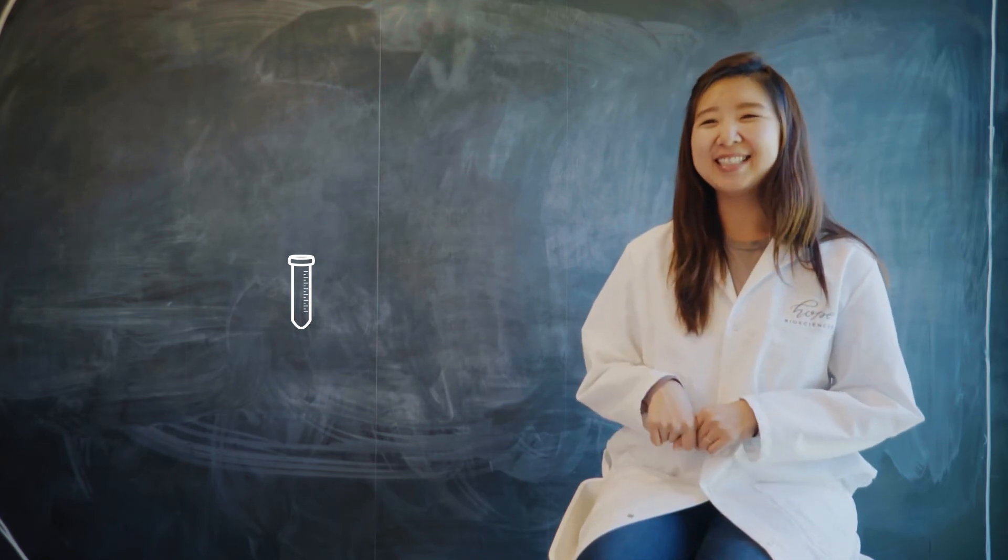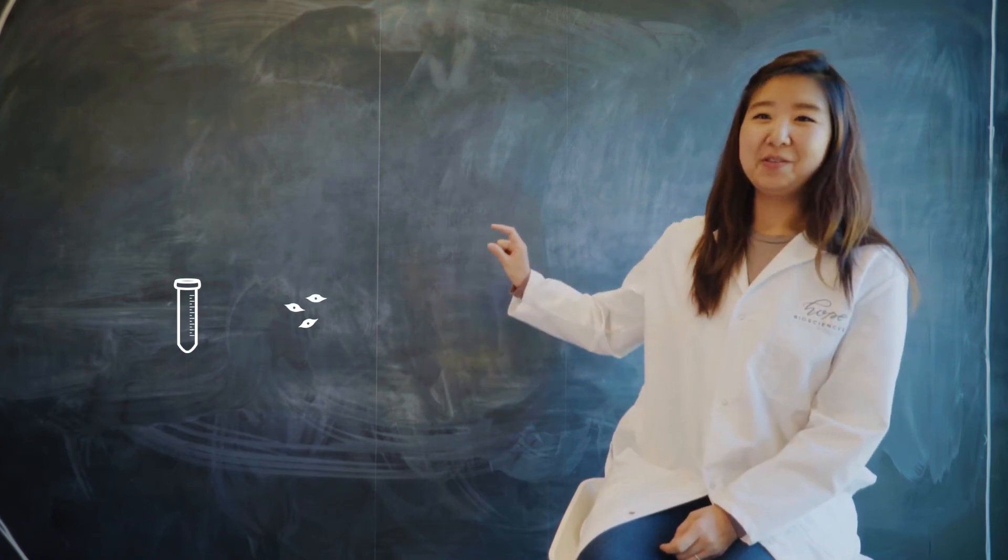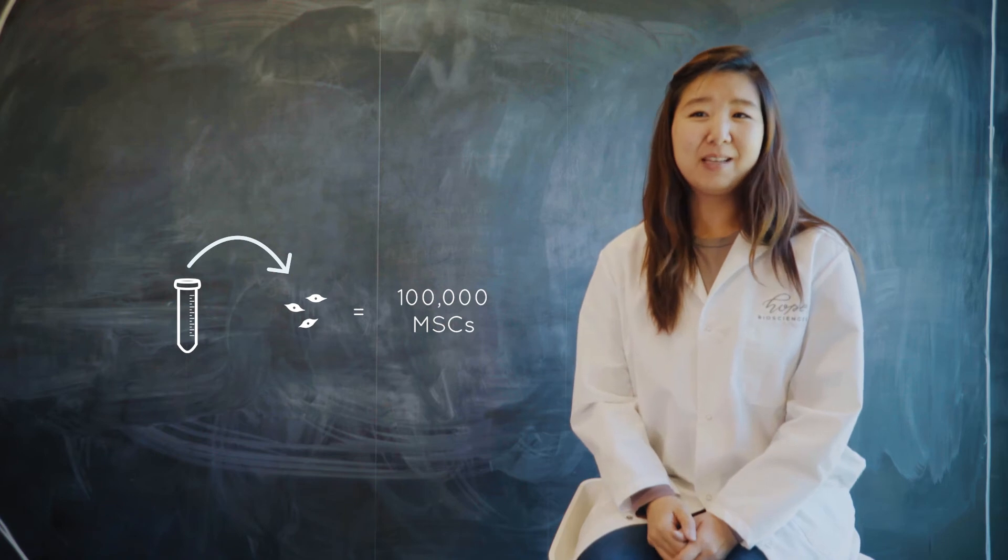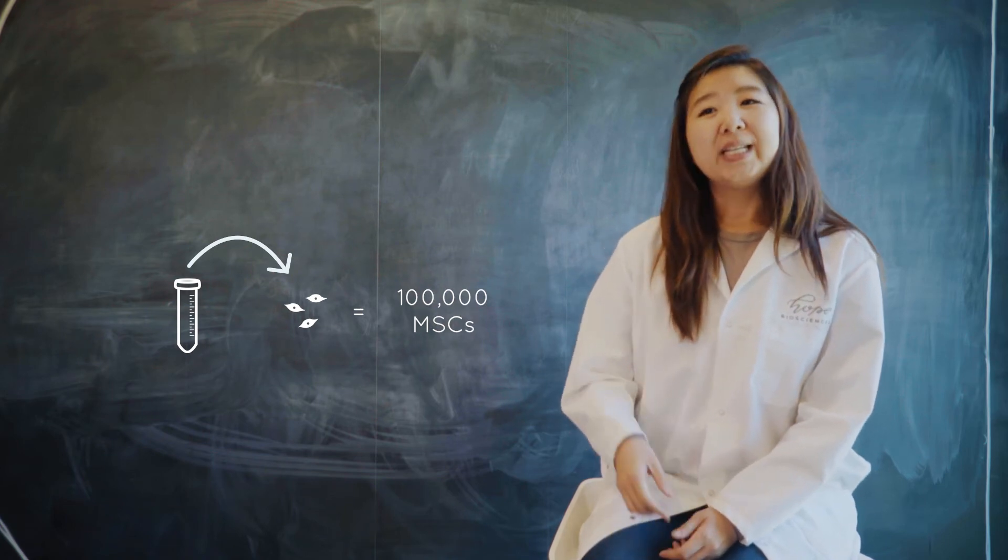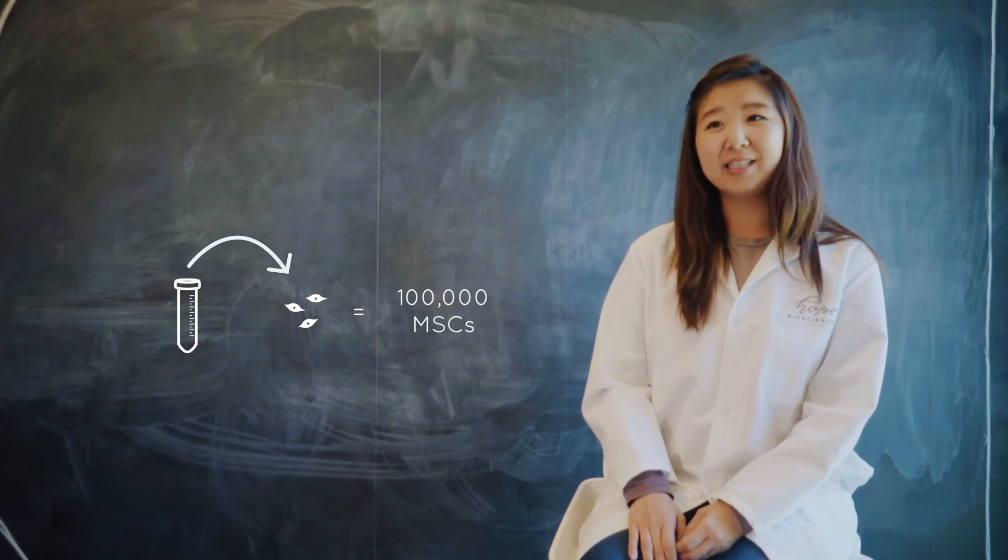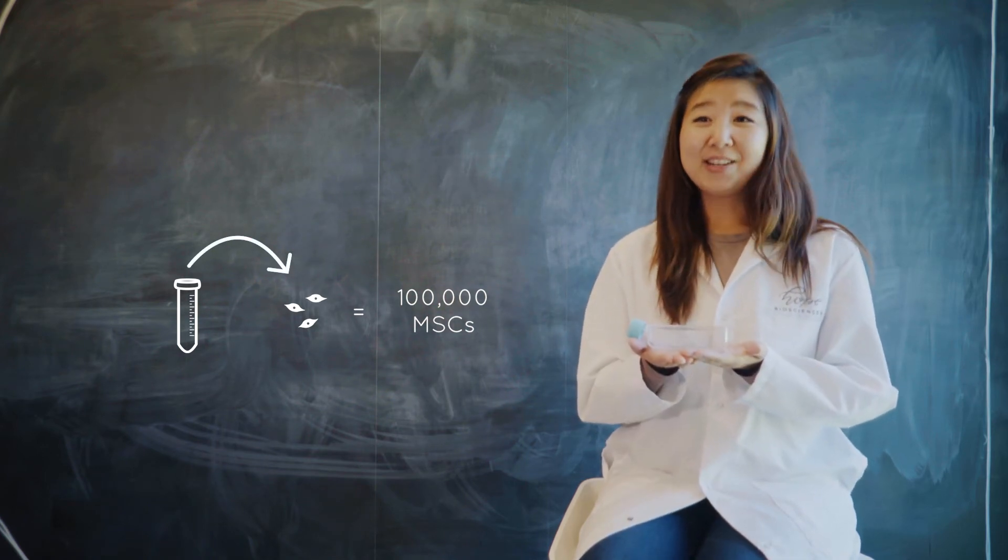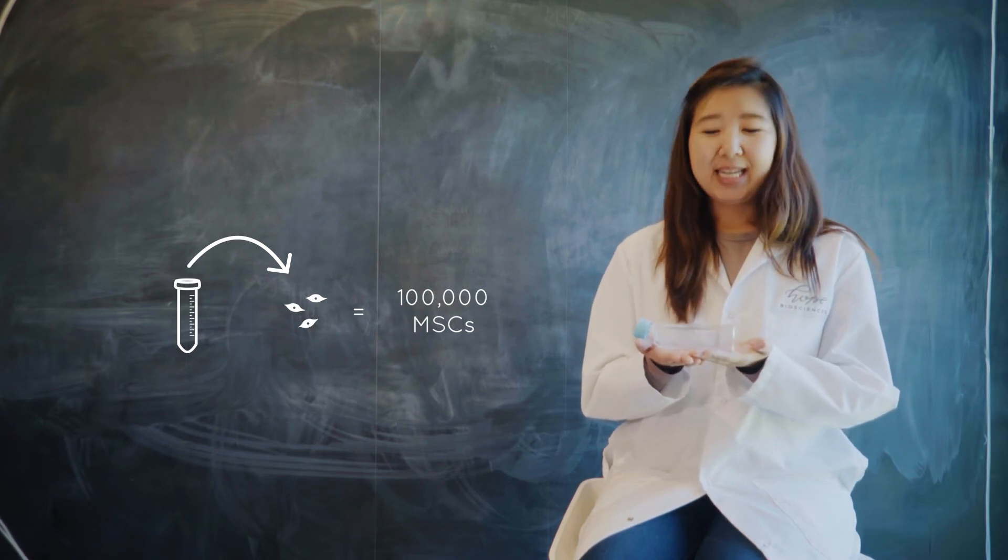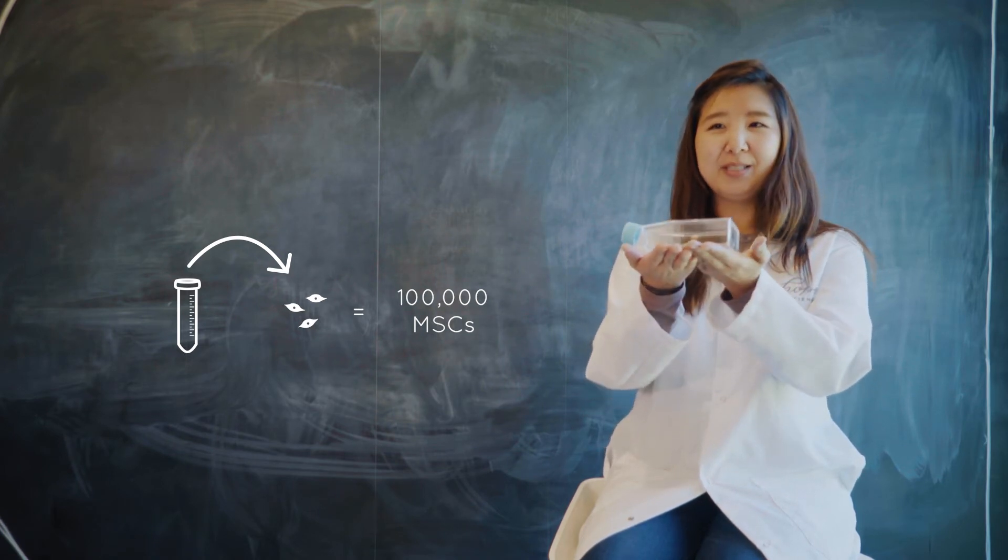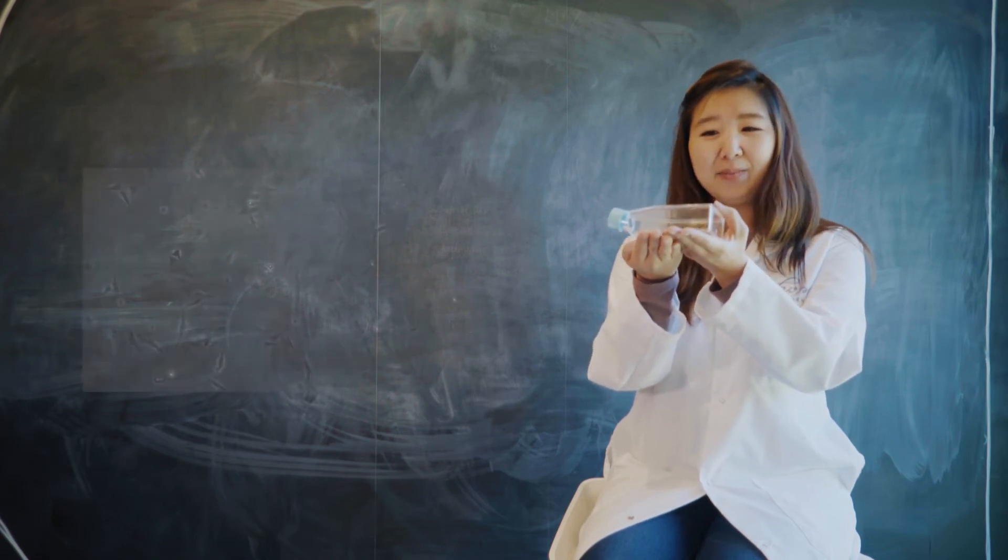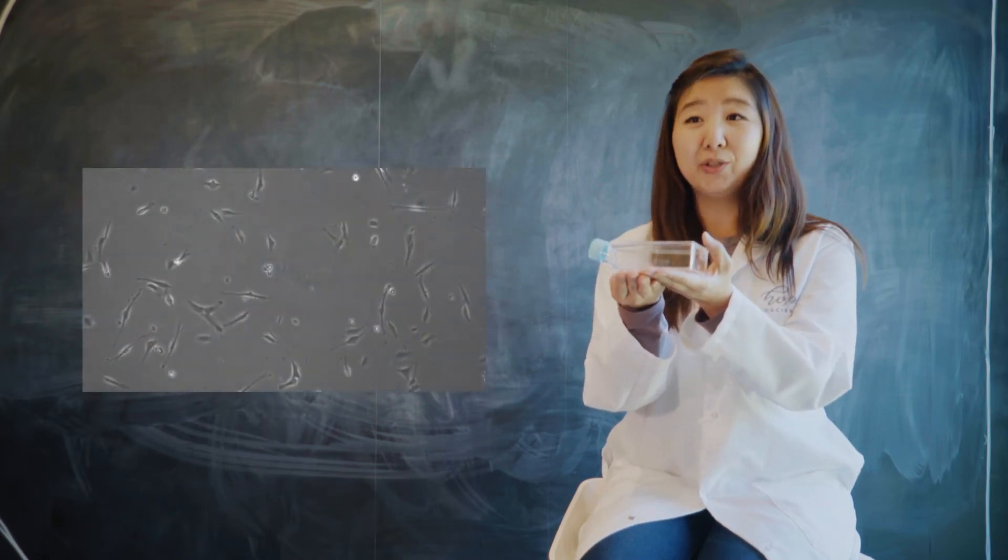Here's a fun fact. From one tablespoon of fat, we will start with approximately 100,000 mesenchymal stem cells. We take those cells and begin to seed them on a flask, just like this one. Just like a farmer plants their seeds, so do we. We take the 100,000 stem cells that we've newly isolated and seed them on this flask. They will begin to grow.